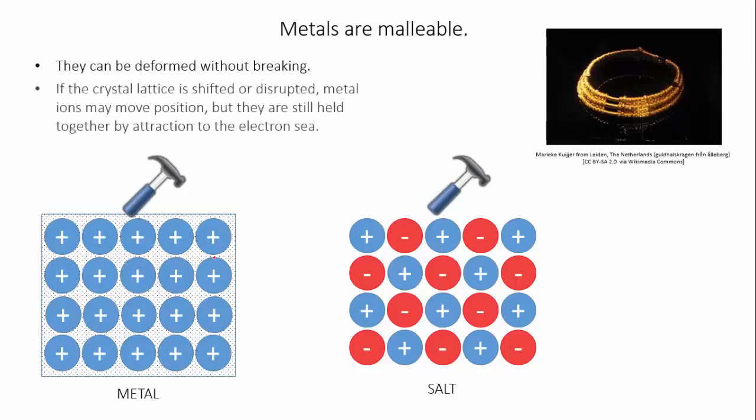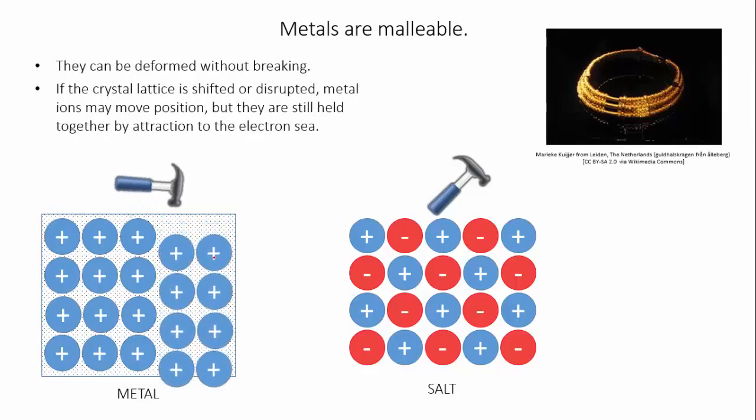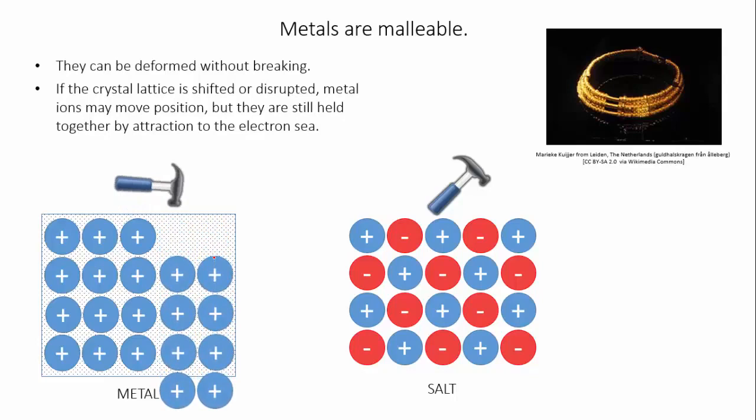The reason for the malleability of metals is that when a metal lattice is disturbed, although the lattice of positive ions may shift out of shape, the sea of electrons is able to flow between the ions and maintain the electrostatic attraction. This allows the lattice to be greatly deformed without it breaking.